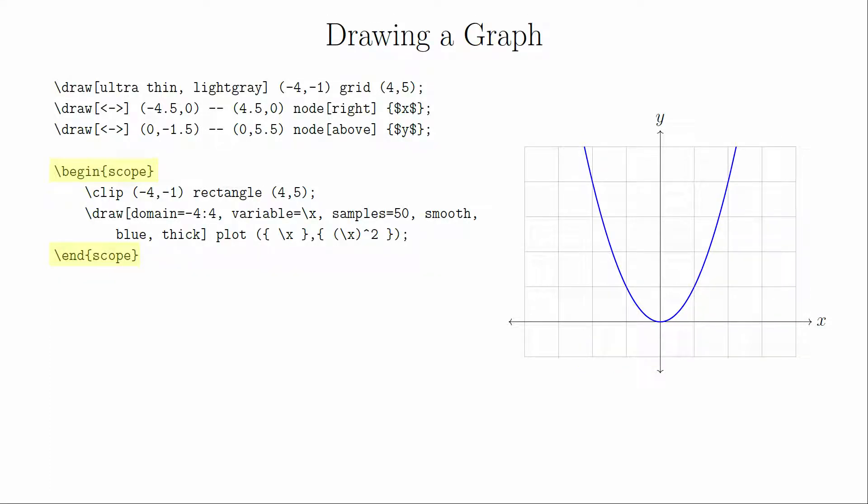To take care of this, we are going to create a scope environment. The code inside of the scope environment is drawn on its own and then inserted into the larger picture. We can also apply transformations to the scope, which is handy if you have complex objects that you want to move as a group, but we won't be using any of that for this graph.